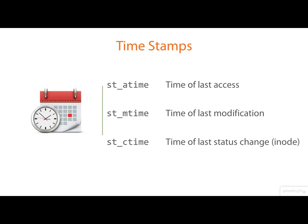C time is the time of the last status change — basically, that means the time of the last change to the inode. So, for example, if I change the access permissions or the ownership on a file, that would update C time. One of the things that surprised me for quite a long time about Unix and Linux is that the file systems do not record the creation time of the file.